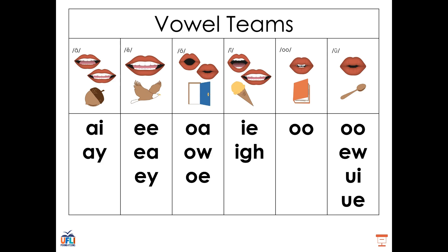Let's look at some of the vowel teams we've learned so far. We learned how to make the long A sound by using the letters AI or the letters AY. Then we learned how to make long E by using EE, EA, and EY. Then we learned how to make the long O sound. We used the vowel teams OA, OW, and OE to make the long sound O.